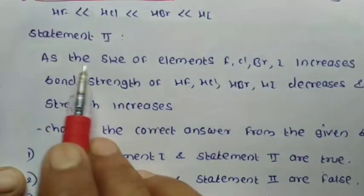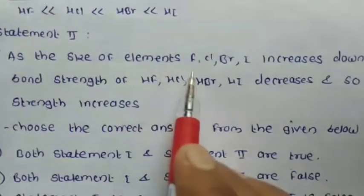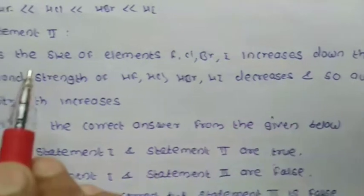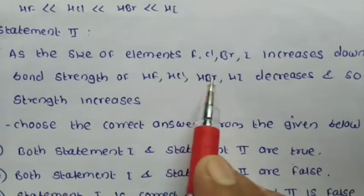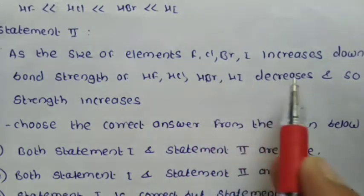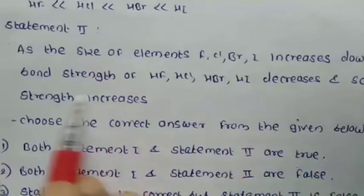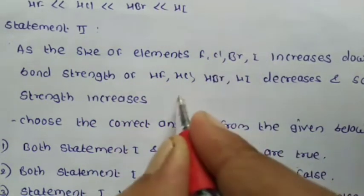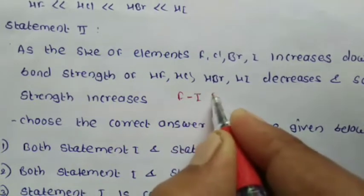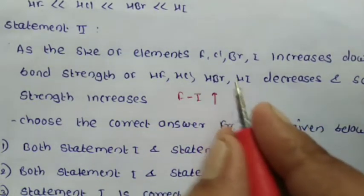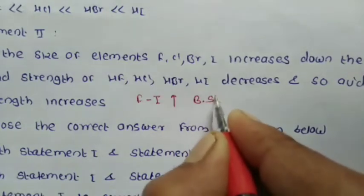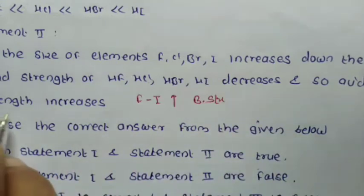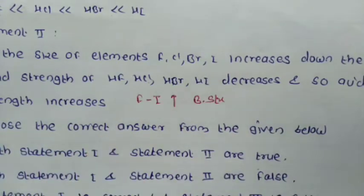Statement 2: As the size of the halogen — fluorine, chlorine, bromine, iodine — increases down the group, the bond strength of H–F, H–Cl, H–Br, H–I decreases, and so acid strength increases. The size of halogens increases from fluorine to iodine, so bond strength of the H–halogen bond decreases, and therefore acid strength increases. This is also a correct statement.